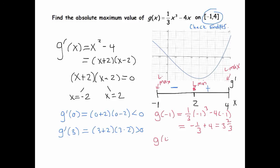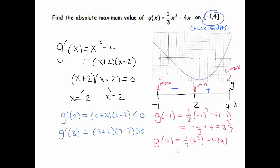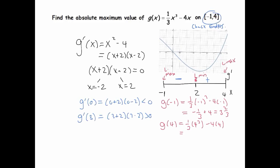And then g of 4 is equal to 1 third, 4 cubed, minus 4 times 4, which equals, that equals 64 to make this smaller here. That equals 64 thirds minus 16, which is 48 thirds. And 64 minus 48 gives me 16.